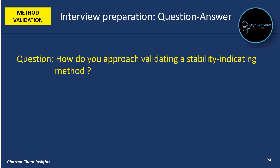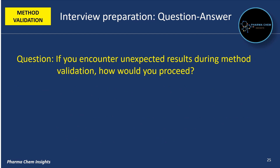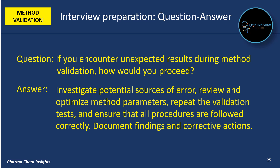Next question: how do you approach validating a stability indicating method? A stability indicating method is validated by demonstrating that it can accurately and precisely measure the active ingredient API without interference from degradation products under various stress conditions, such as heat, light and pH. This is a scenario-based question: if you encounter unexpected results during method validation, how will you proceed? Investigate potential sources of error, review and optimize method parameters, repeat the validation test and ensure that all procedures are followed correctly. Document findings and corrective actions should be taken.